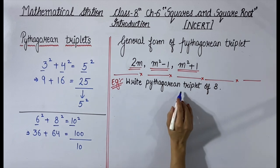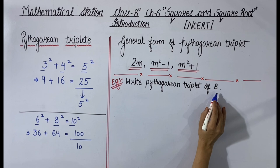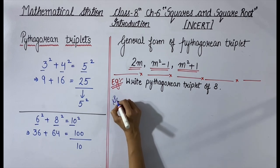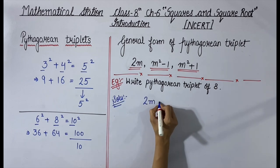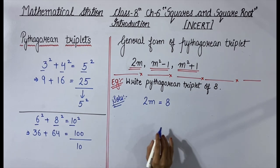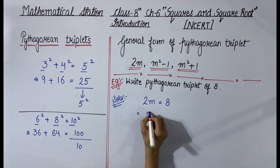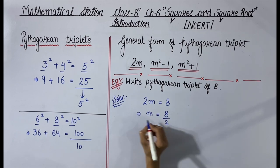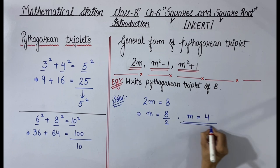Let's understand with an example. Question: Write the Pythagorean triplet of 8. We need to find the Pythagorean triplet where one member is 8. Let's suppose 2m = 8. To find m, divide both sides by 2: m = 8 ÷ 2 = 4. So the value of m is 4.